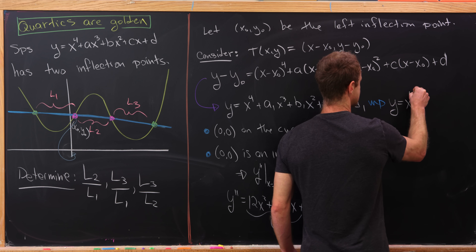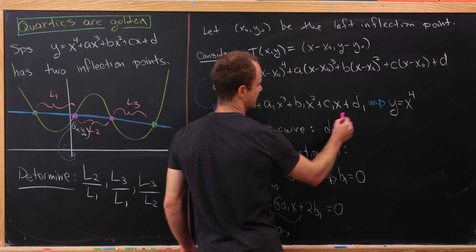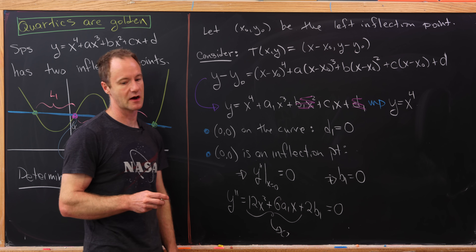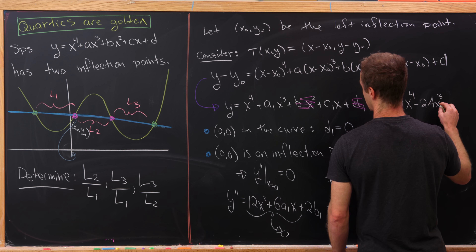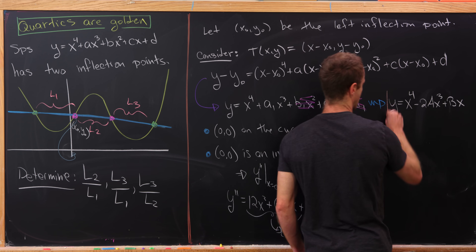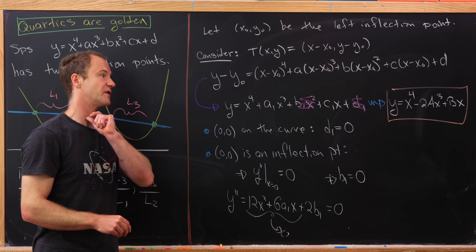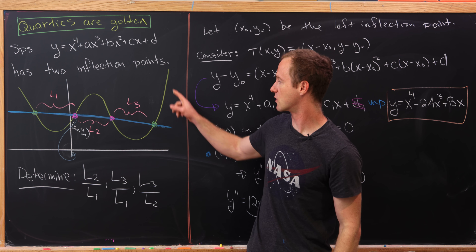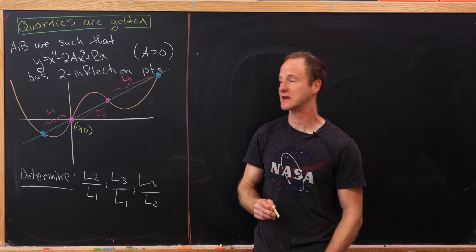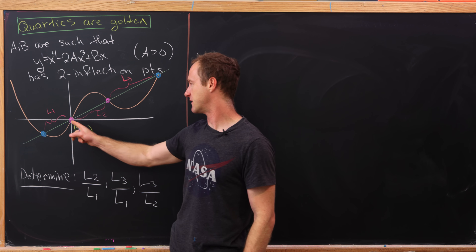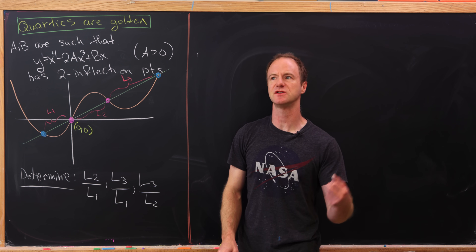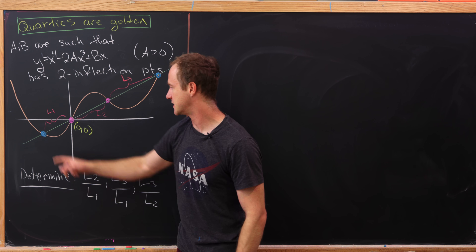The simplified curve is y = x⁴ − 2Ax³ + bx, where we rename the cubic coefficient as −2A to make the calculation easier. This is the version of our curve we'll work with. On the redrawn graph corresponding to our translation, we have an inflection point at the origin (0, 0) and a second inflection point to the right.